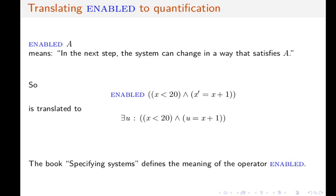Why this translation? Because we are looking for a next state such that if the system transitioned to that state, then the transition would satisfy the formula x less than 20, etc.